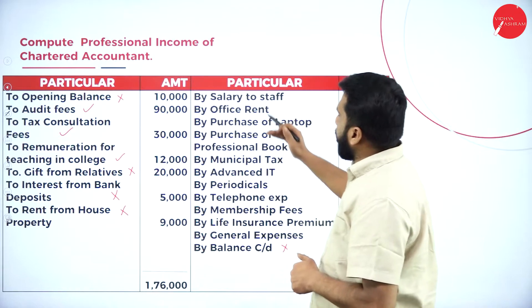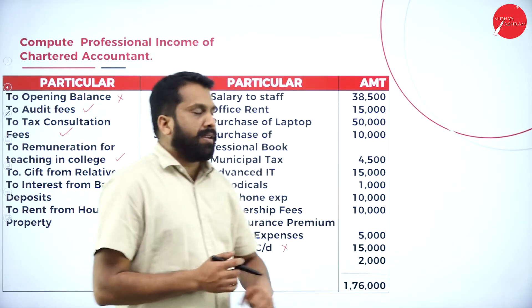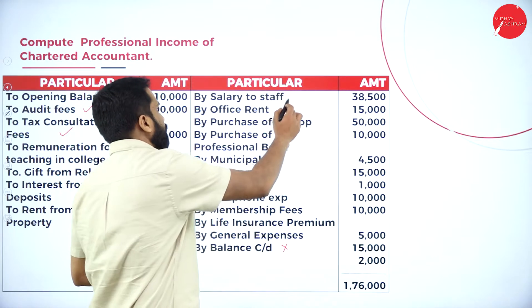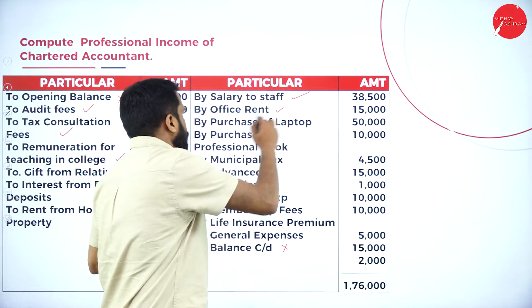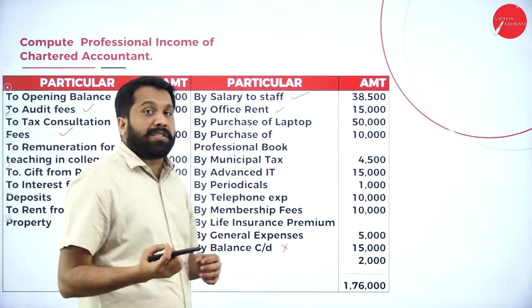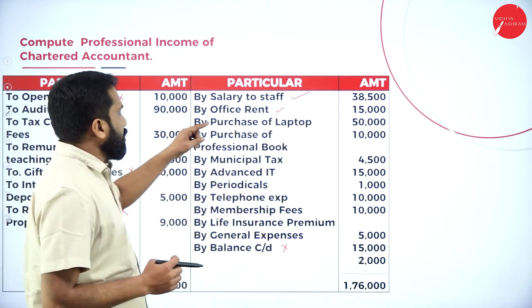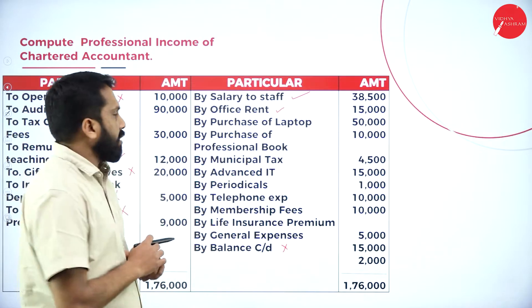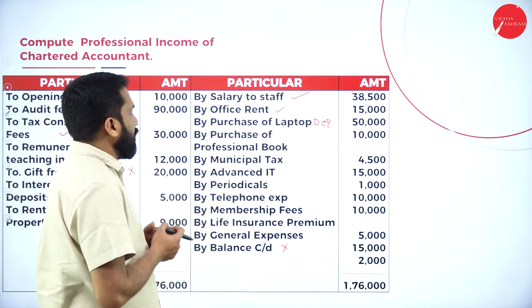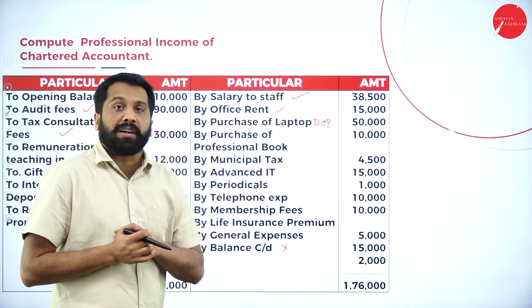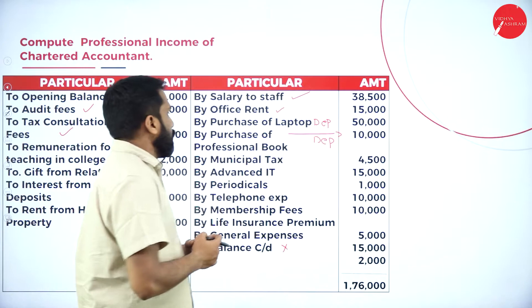Salary to staff is a part of your profession. Office rent is also part of your profession. Purchase of any capital asset — like a laptop — we will not consider; only depreciation on it should be considered. So purchase of laptop is not part of your profession; we calculate only depreciation. Similarly, purchase of professional books — we will not consider the purchase; only the depreciation on professional books is called your professional expenditure.